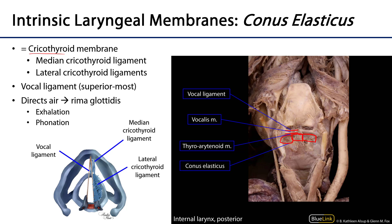The conus elasticus directs air out through the larynx, specifically toward the space between the vocal folds called the rima glottidis. It is the rima glottidis that expands as the vocal folds abduct, or narrows as they adduct. For breathing and ventilation, the folds should be maximally abducted or open. For phonation, those folds need to be in relative close proximity so that they can vibrate.